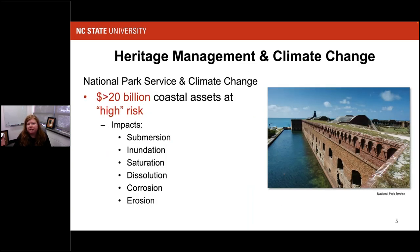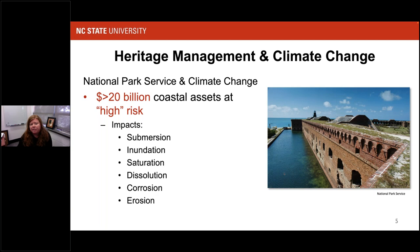When we think about the National Park Service and climate change related to heritage management, a study conducted several years ago demonstrated that over $20 billion of coastal assets were at high risk to sea level rise, coastal flooding, and erosion impacts. Not all of the coastal assets are considered heritage — some could be roads or communications and electrical infrastructure. But the key concern related to sea level rise and increased storm surge is that heritage itself could become submerged, inundated, saturated, experience dissolution or corrosion, or be washed away by erosion.